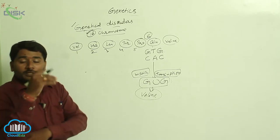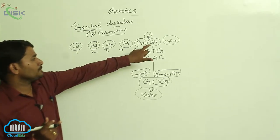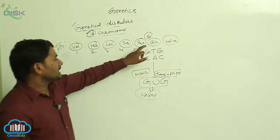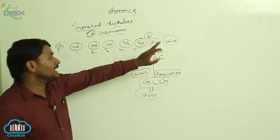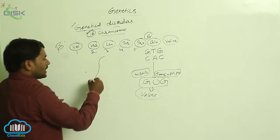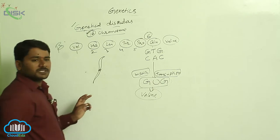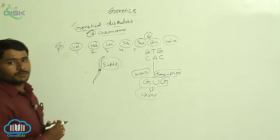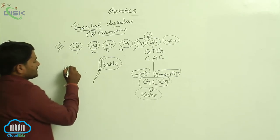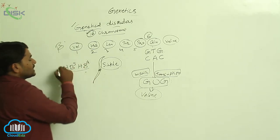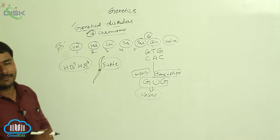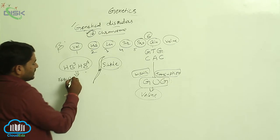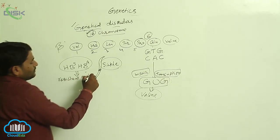Whenever the point mutation takes place in the sixth position of the beta polypeptide chain, in the place of glutamic acid, valine is produced. Then the RBC structure is changed and converted into a different sickle shape. Individuals with HbS/HbA — heterozygous — are generally resistant to malaria.